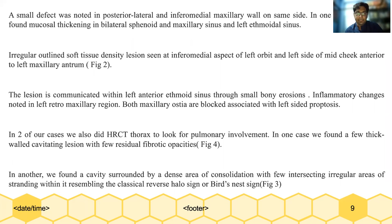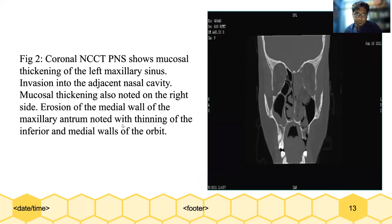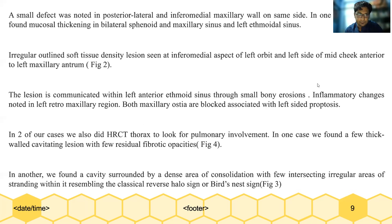In one of the cases, we found mucosal thickening in bilateral sphenoid and maxillary sinuses and left ethmoid sinus. An irregular outlined soft tissue density lesion was seen at the inferomedial aspect of the left orbit and left side of the mid-cheek, anterior to the left maxillary antrum, as shown in figure 2. The mucosal thickening was also noted on the right side. There is erosion of the medial wall of the maxillary antrum with thinning of the inferior and medial wall of the orbit. The lesion communicated with the left anterior ethmoidal sinus through small bony erosions. There were inflammatory changes in the left retromaxillary region. Both maxillary ostia were blocked with left-side proptosis.